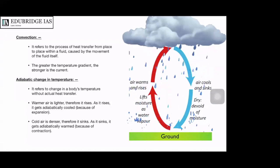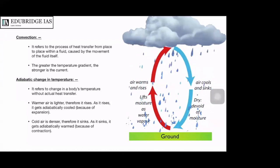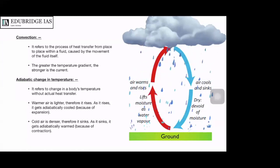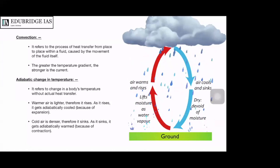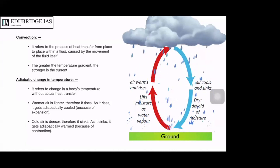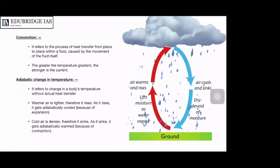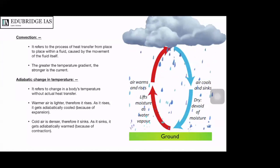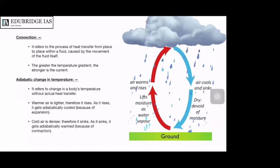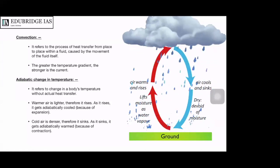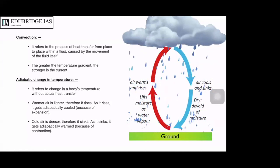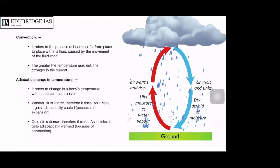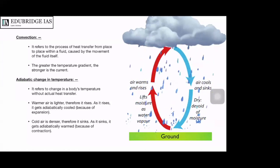If you have an air chamber and you compress the air, even without providing any external heat, the temperature is going to increase — because of contraction of air. And as air sinks and is compressed, it gets adiabatically warmed because of contraction.